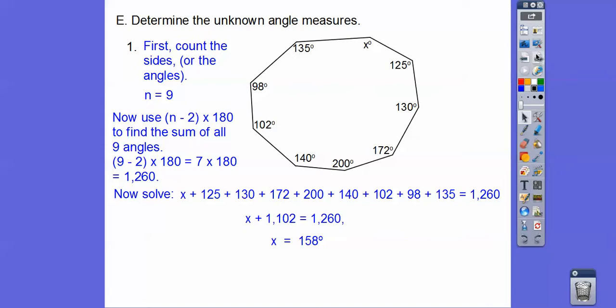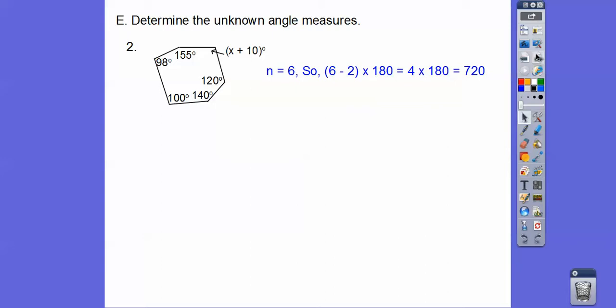The second one here, there's six sides, so 6 minus 2 times 180. 4 times 180 is 720, so add them up to 720, solve for x. Now x here is not the answer because the angle measure is x plus 10. It says determine the angle measure, so the angle is 107.